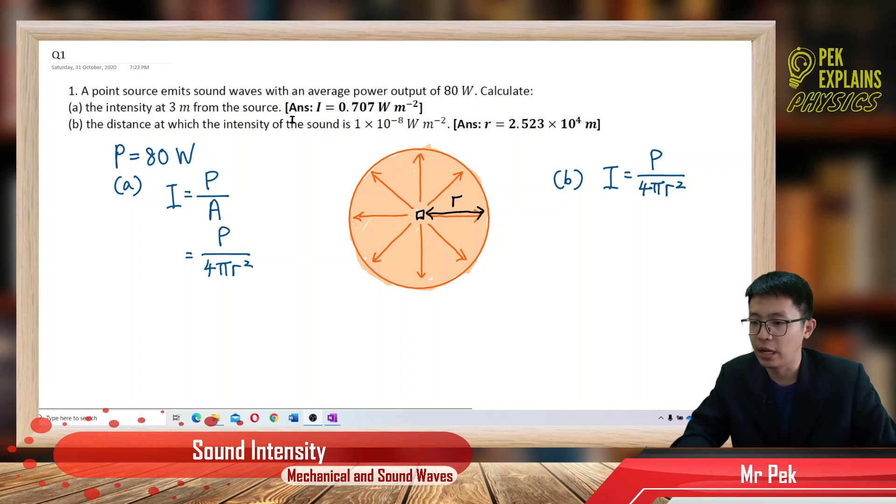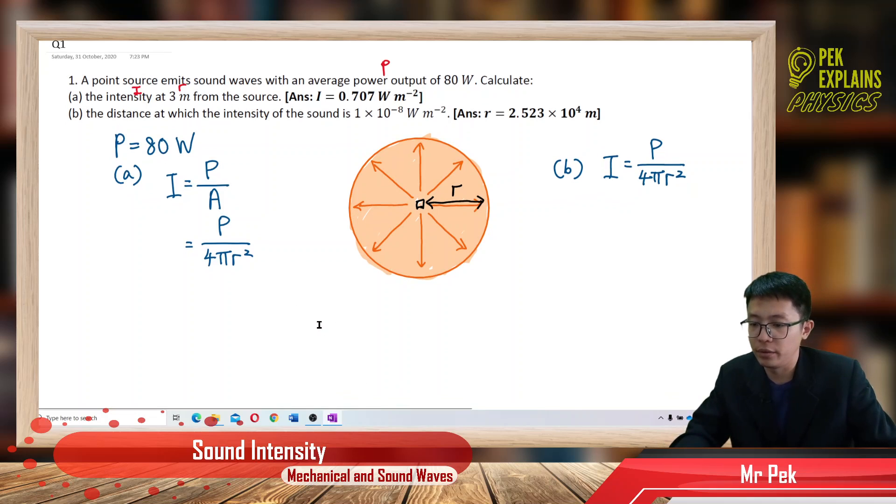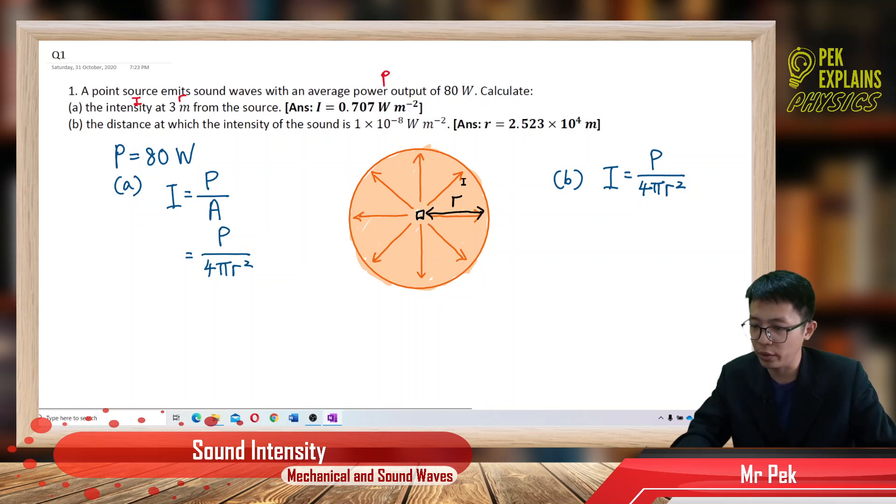Now I have the power output. I put here power output is 80 Watt. To find intensity 3 meter from the source, I just write down information we have. You have the power. You want to find intensity for this distance R meter from the source. We always know that the sound wave travel in all directions, become a sphere area distributed to a sphere area. So, intensity is power over area. Area is a sphere. So, it's 4 pi R square.